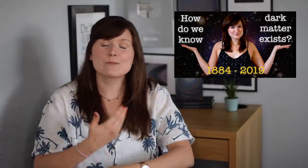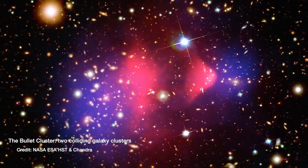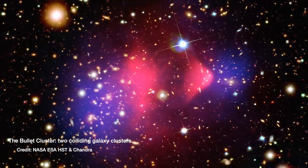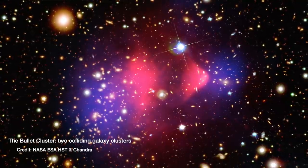Dark matter is matter that we cannot see. It doesn't interact with light in any way, which is the main way that we receive information from the world and the universe around us. We've talked on this channel before about the bucket loads of evidence we have for dark matter that has built up over the past century — everything from how galaxies rotate, to what happens when galaxies collide, to how much mass we measure must be there compared to how many stars we can actually see. We know it's there, we know it's dark, and we know how it's distributed in the universe. We just don't know what it's made of.